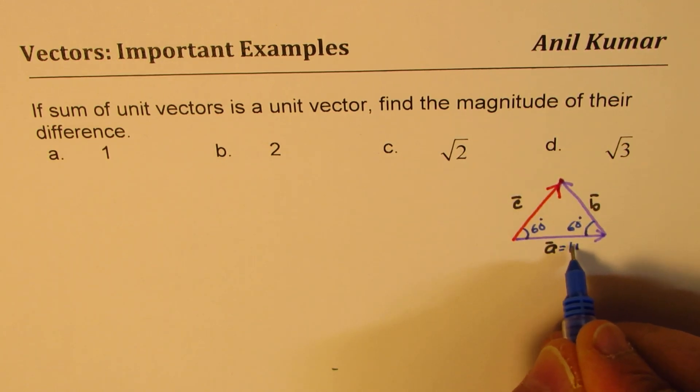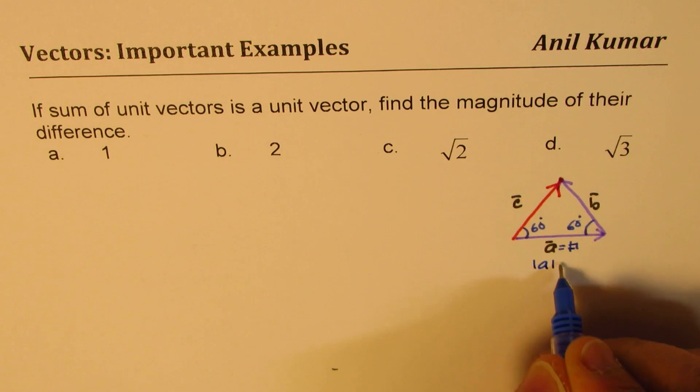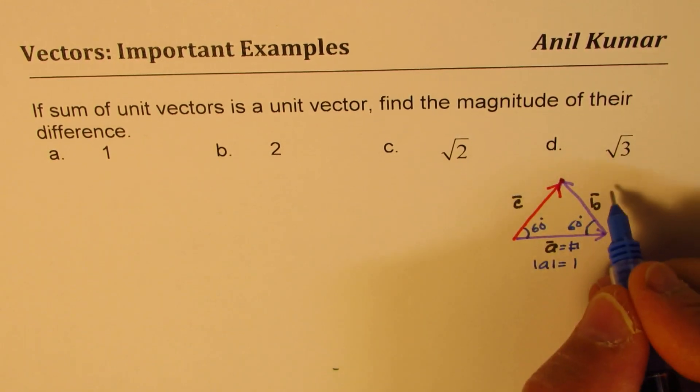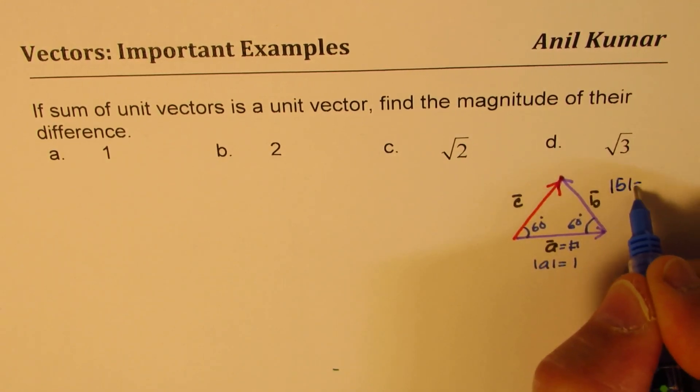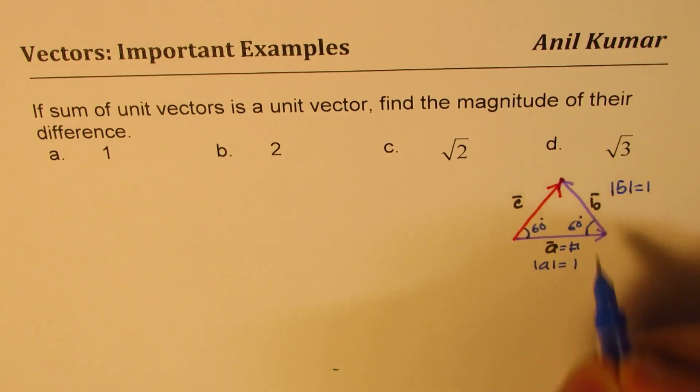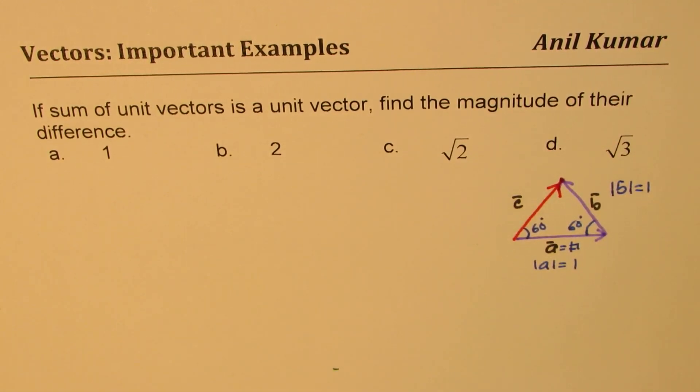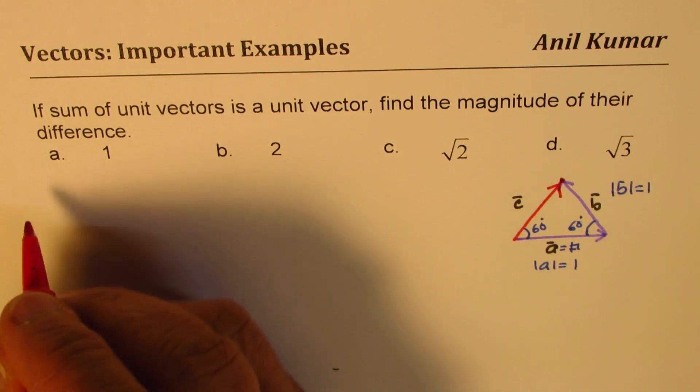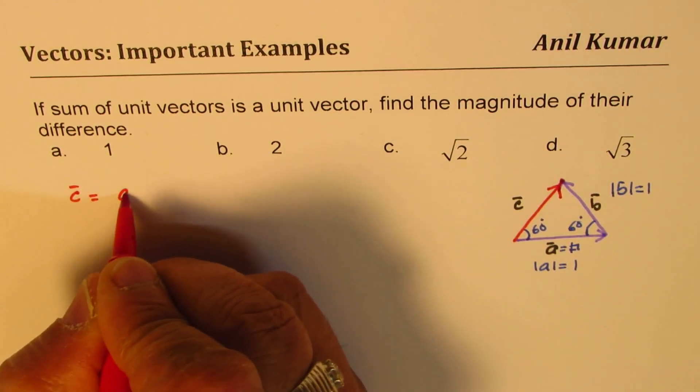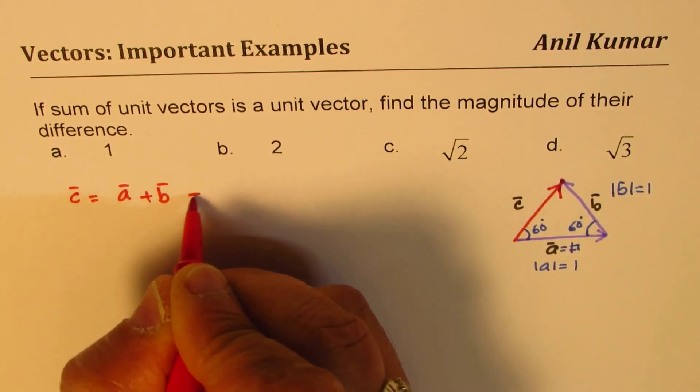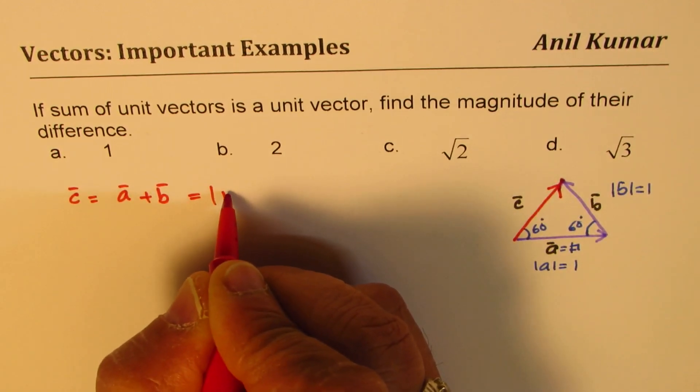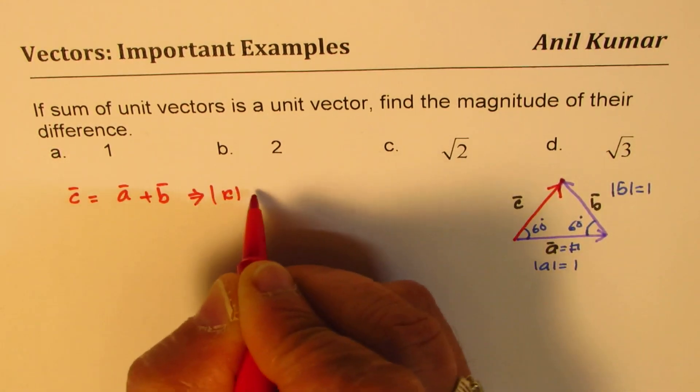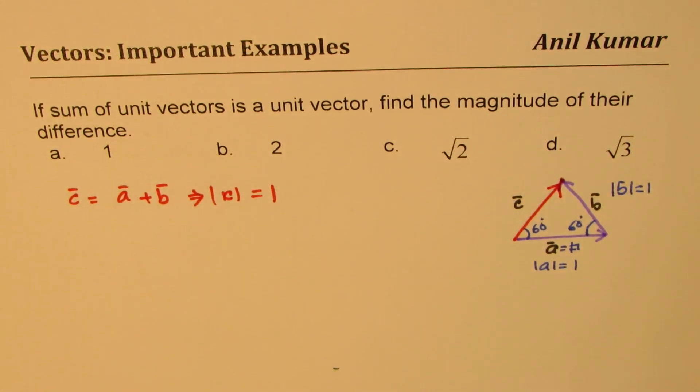So the magnitude of A is 1. So we say magnitude of A equals 1. Magnitude of B is equal to 1. And then we get this. So from the given criteria, we could make this kind of a drawing. Here we know C is basically A plus B and the magnitude of C is equal to 1. This is what we have got.